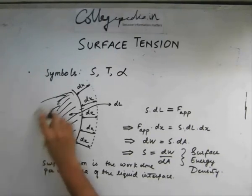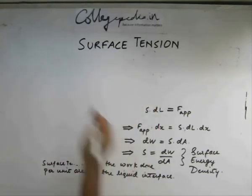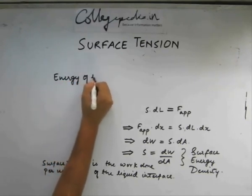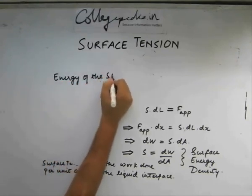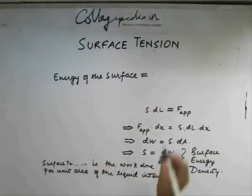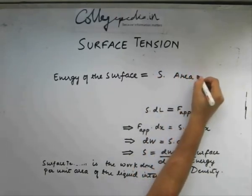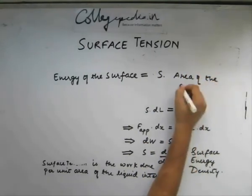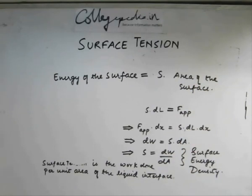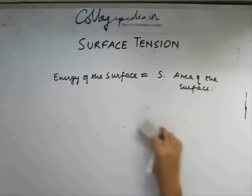So the energy of the surface can be written as the surface tension times the area of the surface. Let us consider a small example.